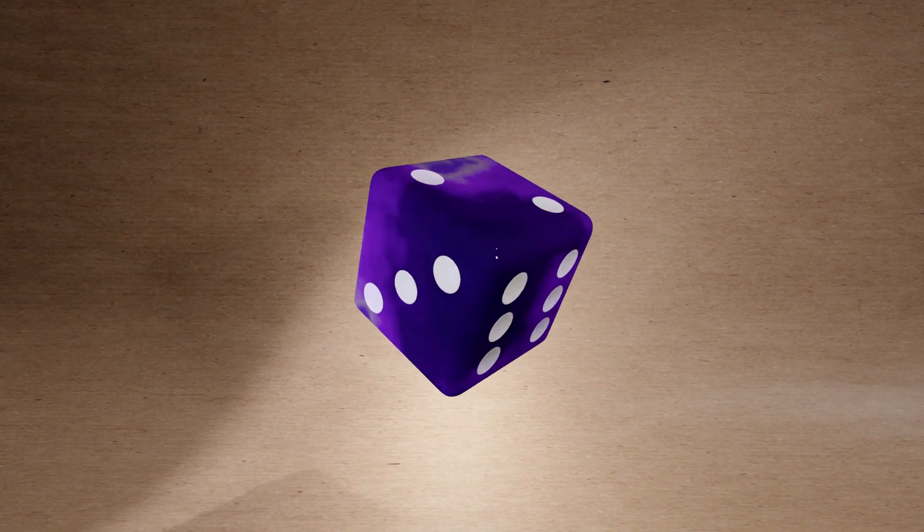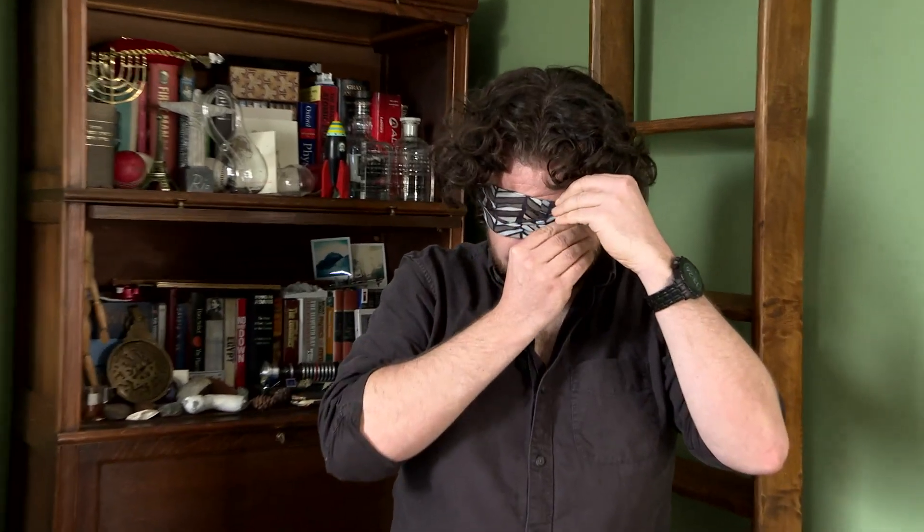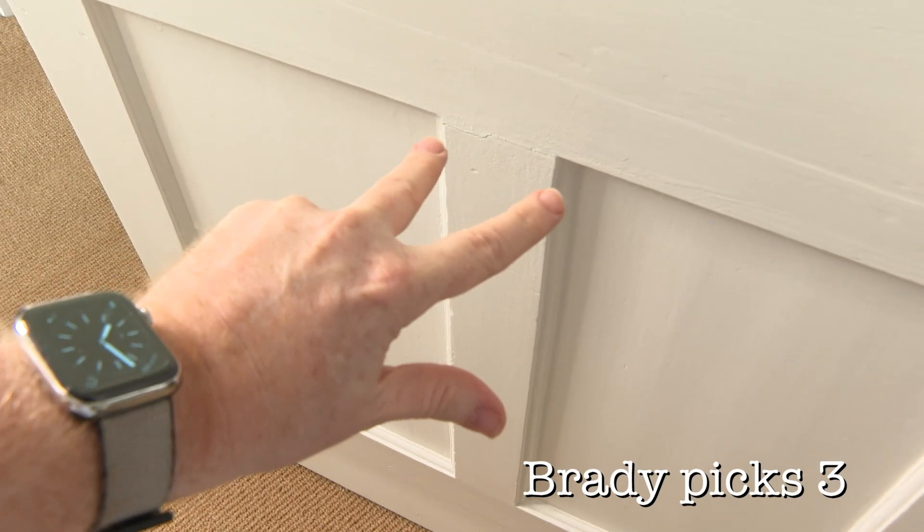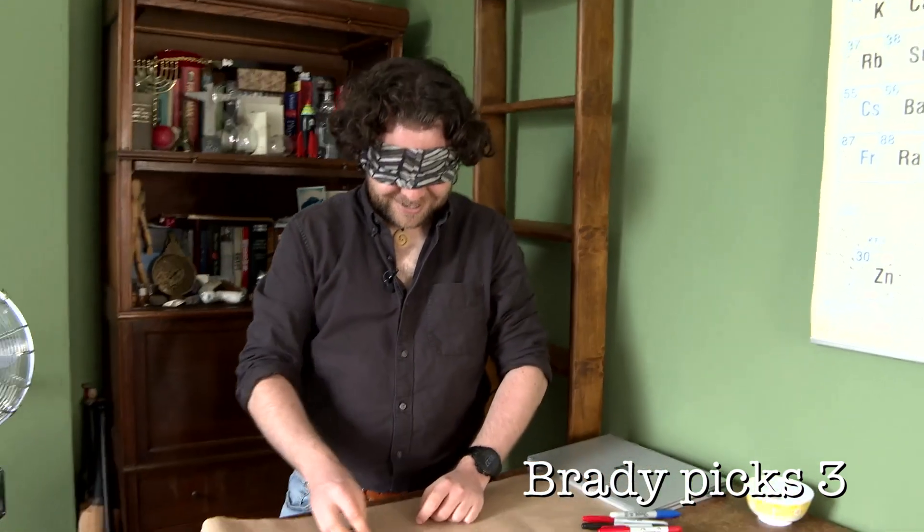So I can't actually see anything at all. Which means that you can feel free to show to the video watchers. Let's go for that number. A whole number, right? You haven't gone and picked pi or something. No, it's an integer and it's on a die.